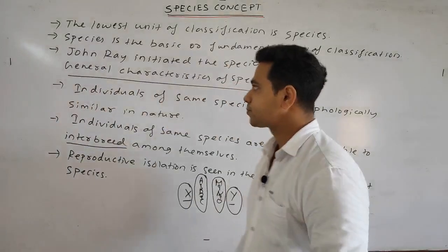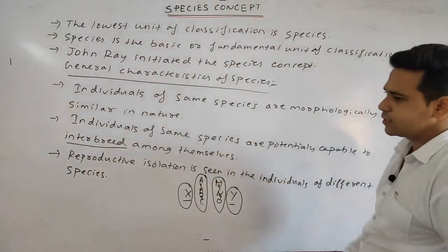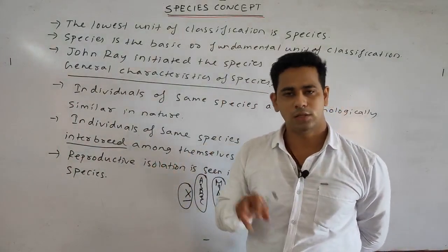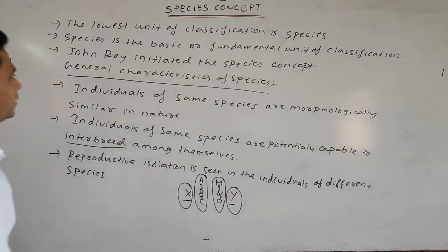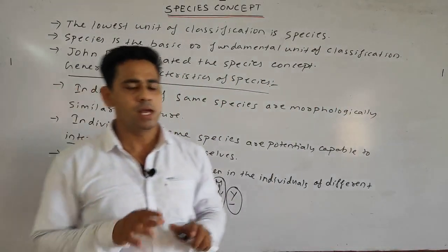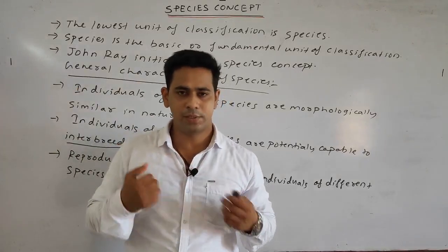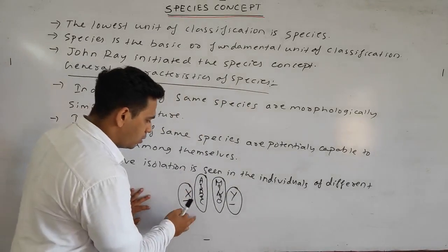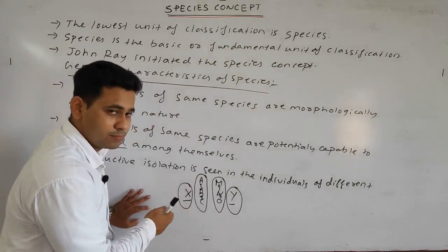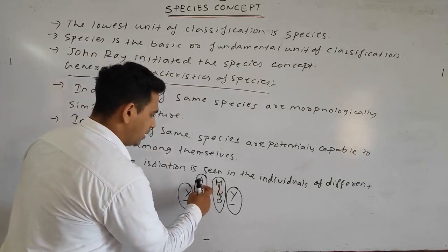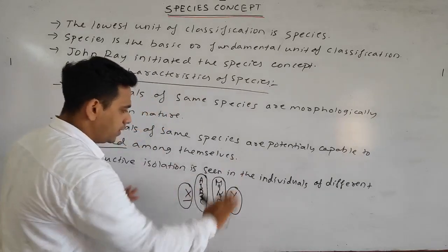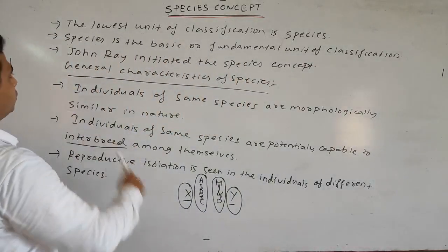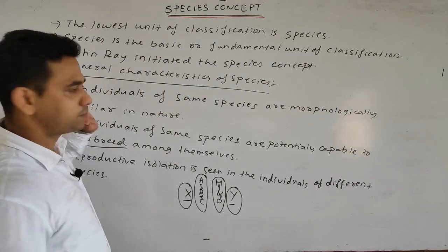To summarize the general characteristics: the lowest unit of classification is species, or it is the basic or fundamental unit of classification. John Ray initiated the species concept. Individuals of the same species are morphologically similar. Individuals of the same species are potentially capable of interbreeding among themselves. And reproductive isolation is seen in individuals of different species.